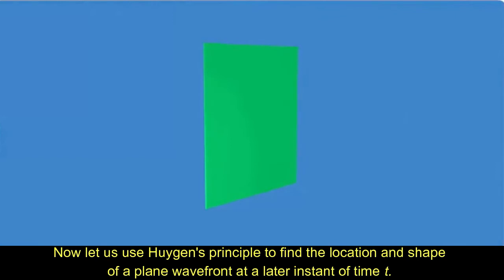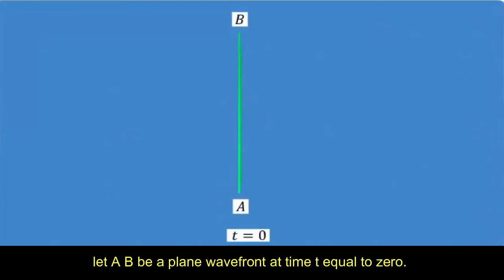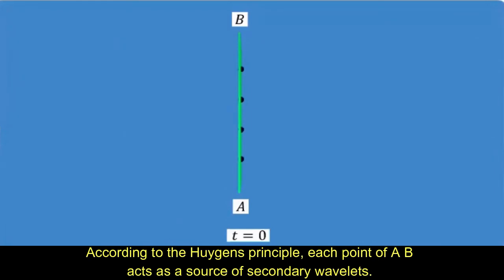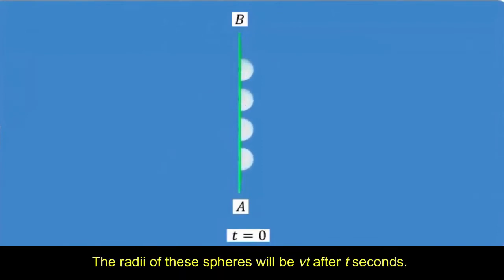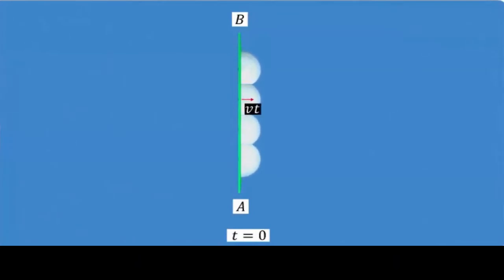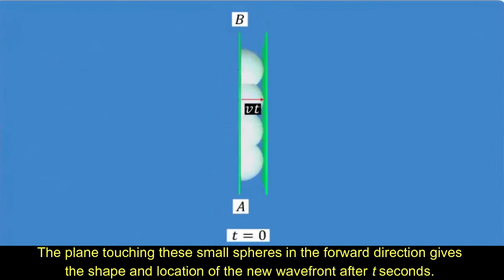Now let us use Huygens' principle to find the location and shape of a plane wavefront at a later instant of time t. Let AB be a plane wavefront at time t equal to zero. According to Huygens' principle, each point of AB acts as a source of secondary wavelets. The radii of these spheres will be Vt after t seconds. The plane touching these small spheres in the forward direction gives the shape and location of the new wavefront after t seconds.